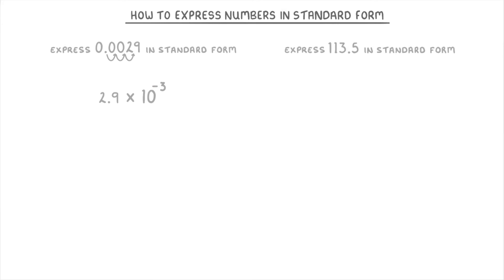For this last one, we're trying to convert 113.5 to standard form. So this time we write out 1.135 and count that the decimal place will have to move one, two places to the left. So we can add times 10 to the power of two, and as 113.5 is bigger than 1.135, we can keep it as a positive two.